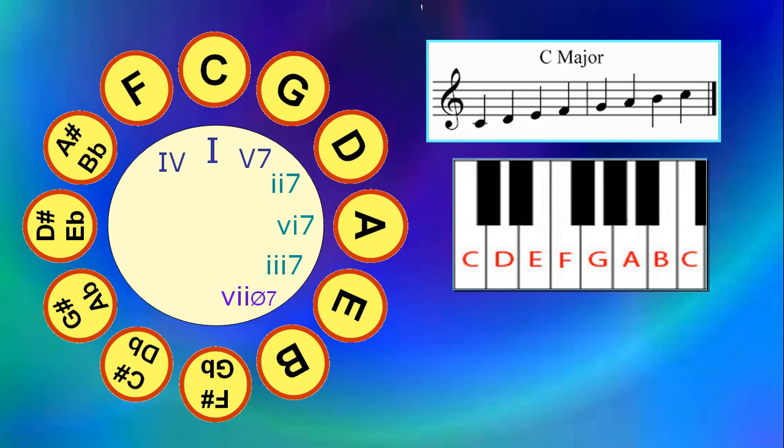The pentatonic—the word penta means 5—so a pentatonic scale means there are 5 tones in this scale. Which 5 tones do you think this scale has?